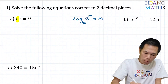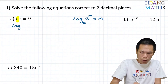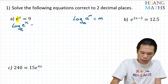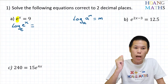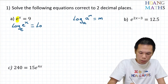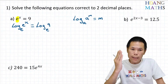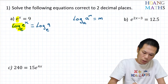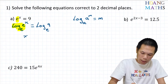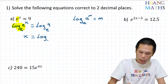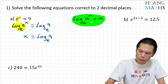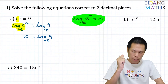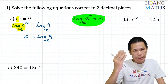So I take log base e on both sides: log base e of e to the x is equal to log base e of 9. Now log base e and e are inverses of each other, so they cancel out. Therefore x is equal to log base e of 9. The rule here is: log of a, a to the power m, is equal to m.